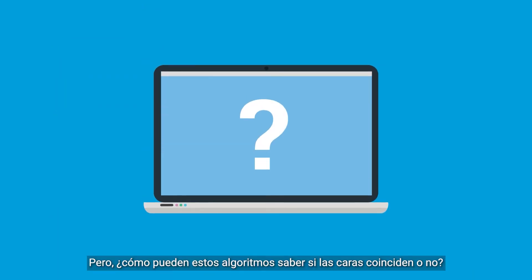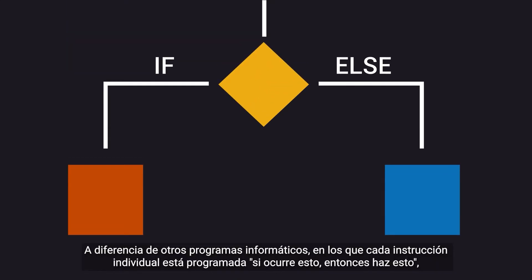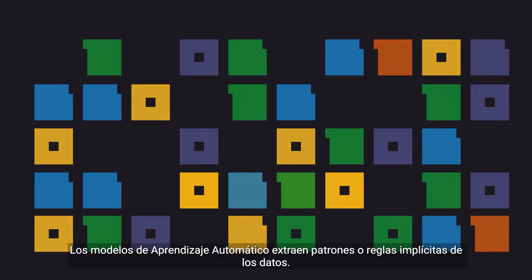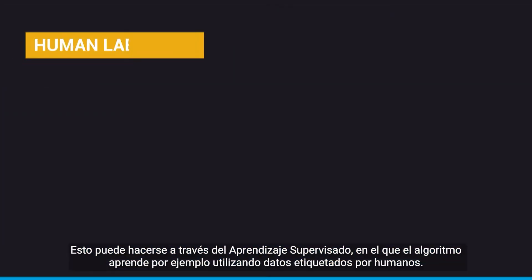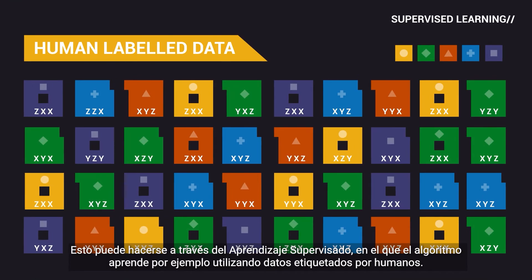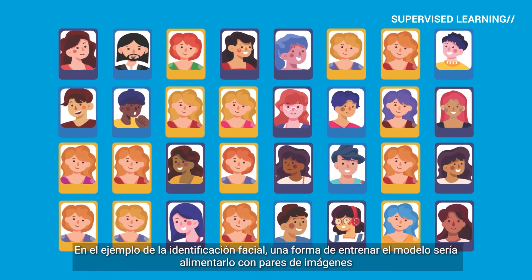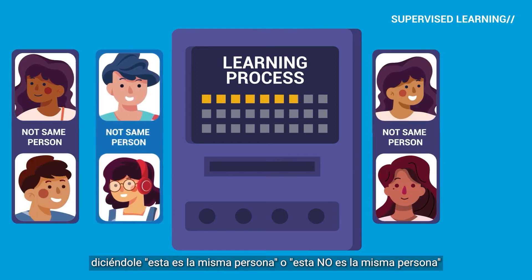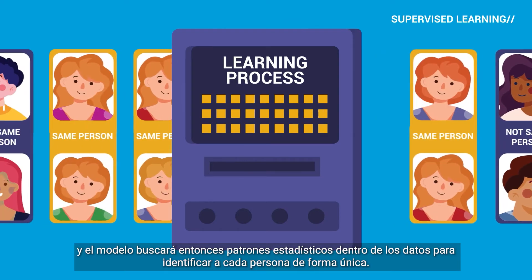But how can these algorithms know if the faces match or not? In contrast with other computer software where each individual instruction is programmed — if this happens, then do this — machine learning models extract patterns or implicit rules from data. This can be done through supervised learning, where the algorithm learns by example using human-labeled data. In the face ID example, one way to train the model would be to feed it with pairs of images, telling it this is the same person or this is not the same person. The model will then seek statistical patterns within the data to identify each person uniquely.